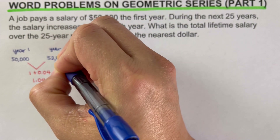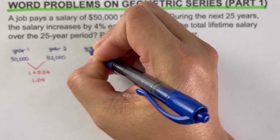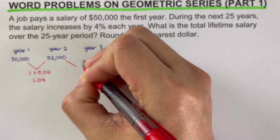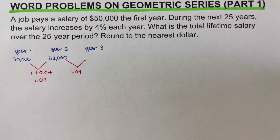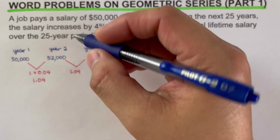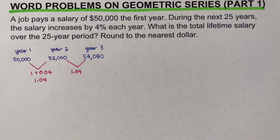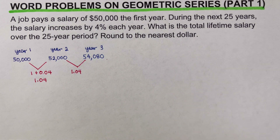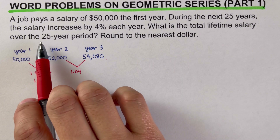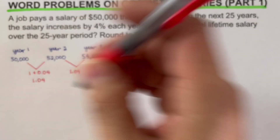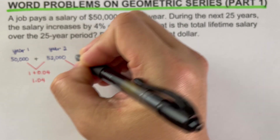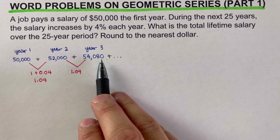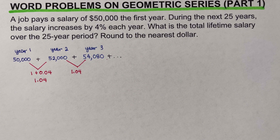For year three, we multiply $52,000 by the common multiplier 1.04, giving $54,080. As you can see, the salary increases by 4% each year. We're asked for the total lifetime salary over the 25-year period — that means adding all salaries from year one through year 25. We could list them all, but there's an easier way using the geometric series sum formula.